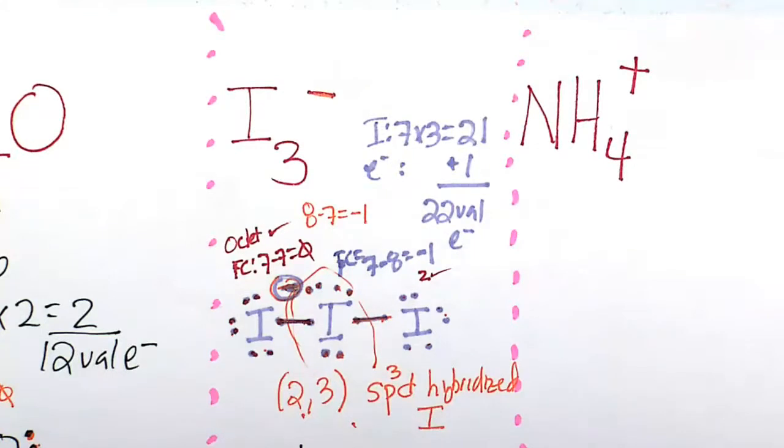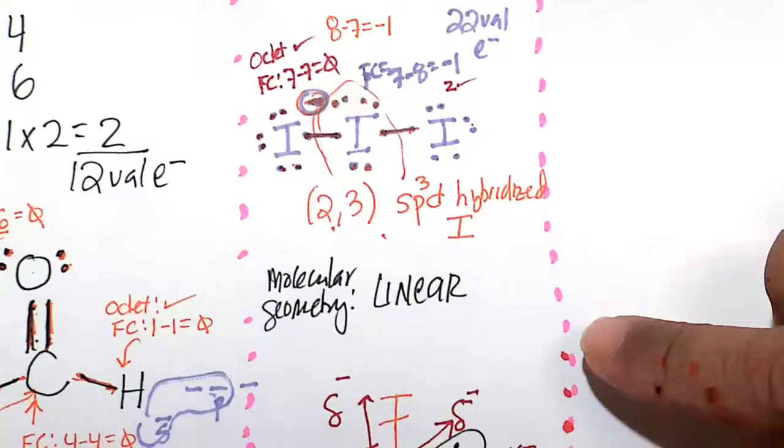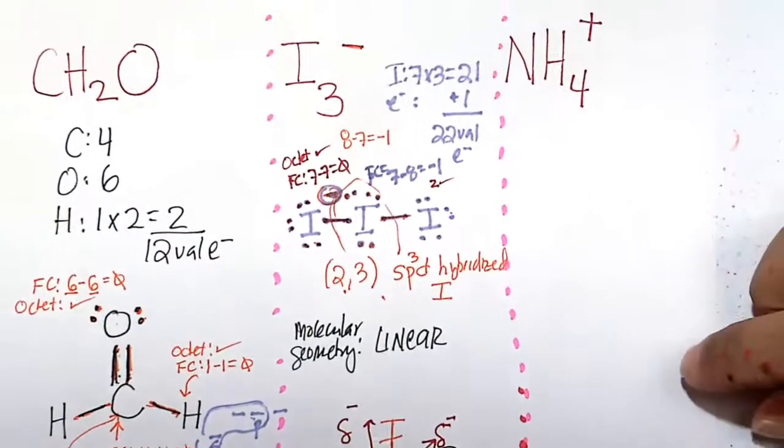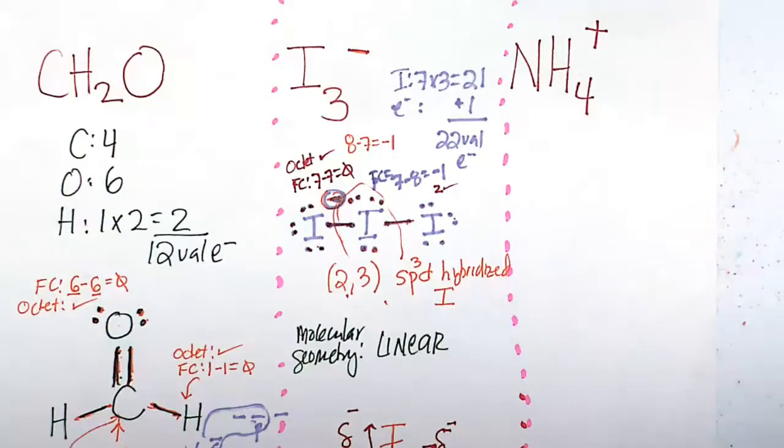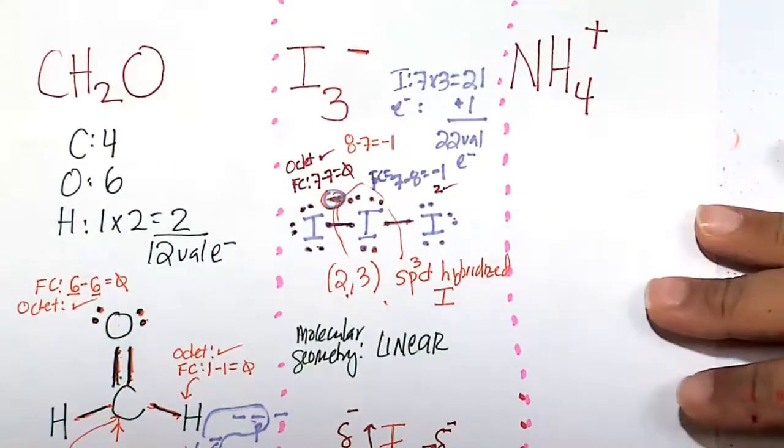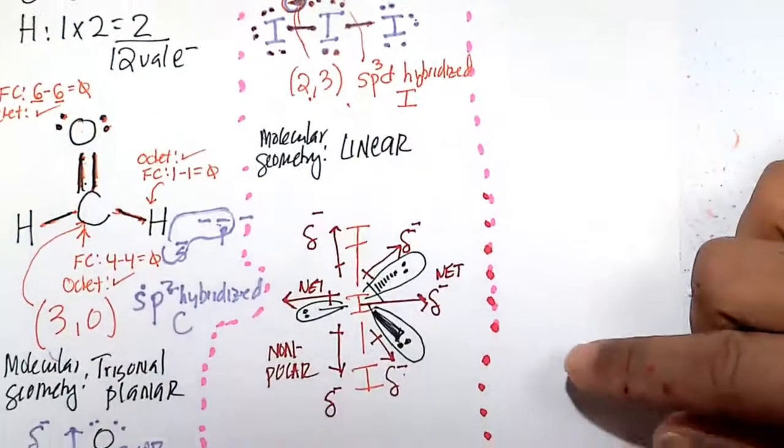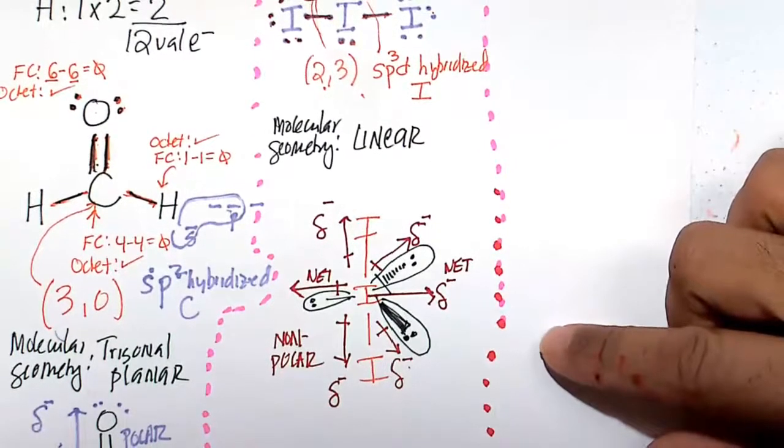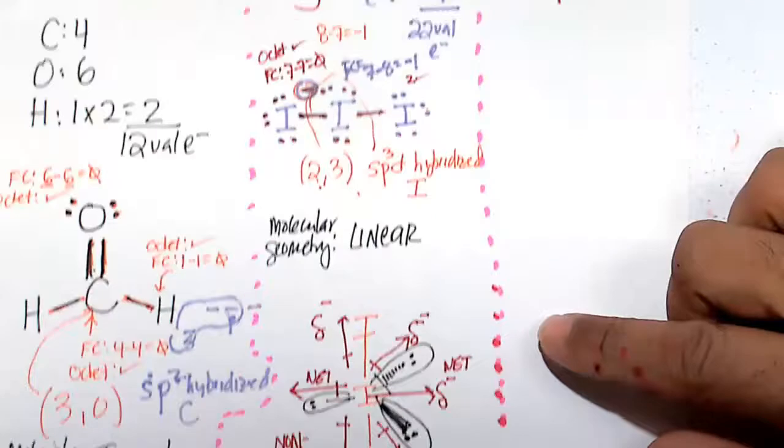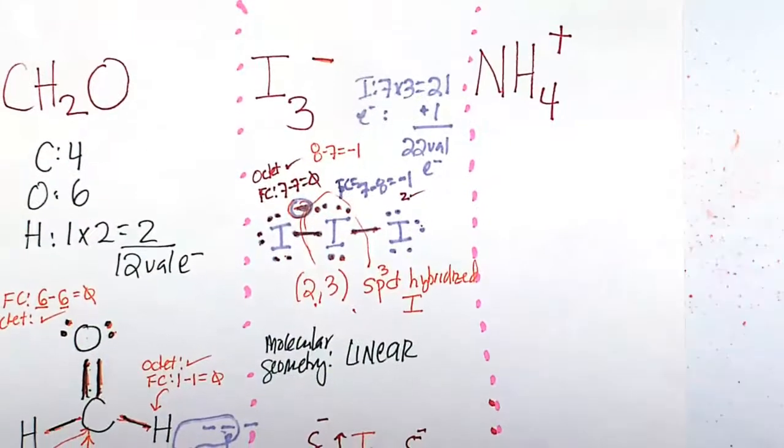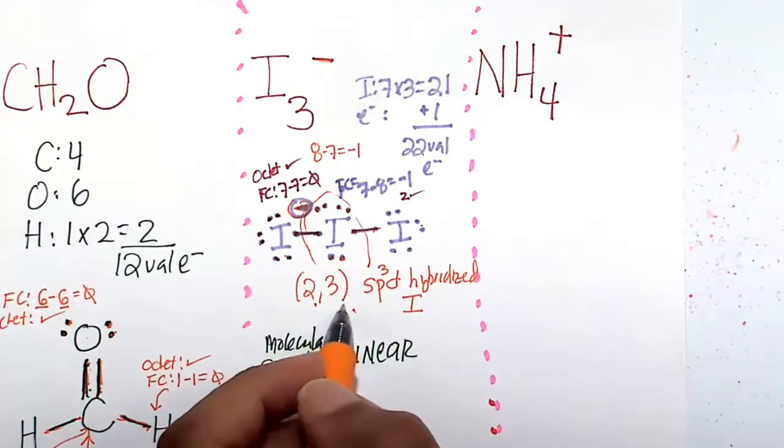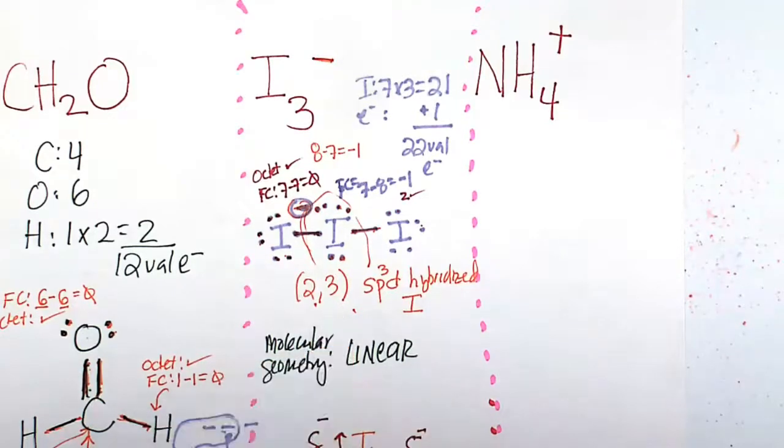So I3 minus, a nonpolar molecule. The strange thing here is that it's linear, so the three electron pairs distort the molecule to such an extent that it gets it to a straight line. And it's a nonpolar molecule because the electrons pull in equal and opposite directions to each other. It is also an sp3d hybridized iodine. That is how we are accommodating five, two of which are bonds, three of which are lone pairs.